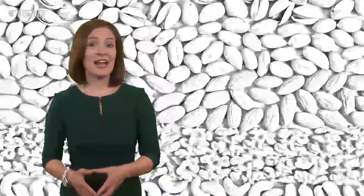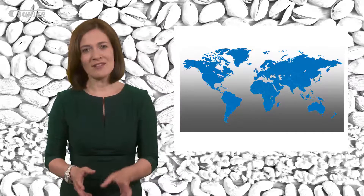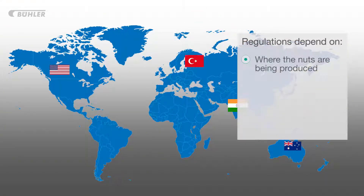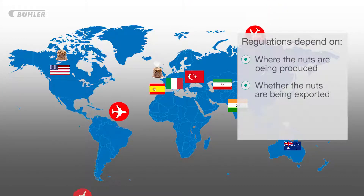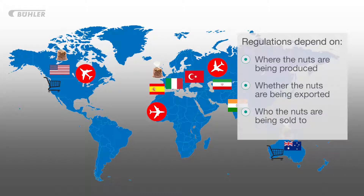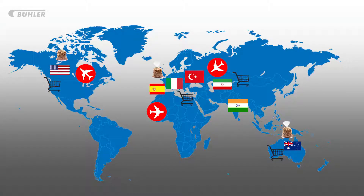So how are physical hazards regulated in the food industry? It's important to remember that nut processors will be bound by different food safety regulations globally depending on where the nuts are being produced, whether the nuts are intended for export or for local consumption only, and who the nuts are being sold to — for example, food manufacturers and retailers will have strict processing guidelines and will undertake regular inspections of their suppliers.